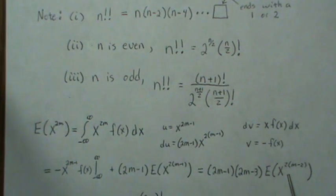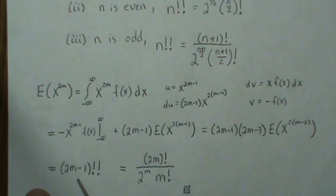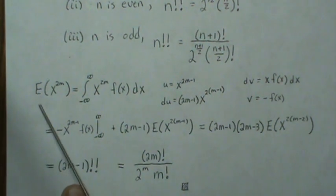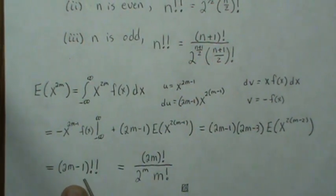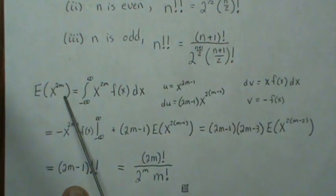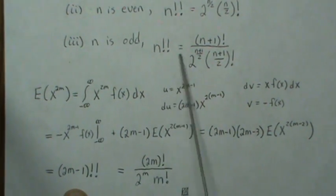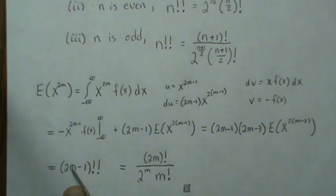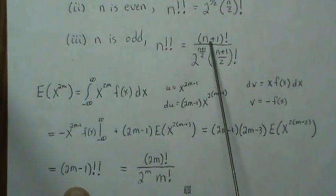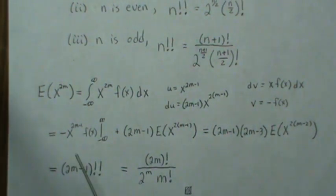This right here ends up being (2m minus 1) double factorial, and so the answer is E[X^{2m}] equals (2m minus 1) double factorial. But when you look it up in books and on the internet, you may not see it written that way. So we have to use the relationship between double factorial and factorial. Plugging in 2m minus 1 — because it's odd, we subtract 1 and it becomes even — we plug it into the formula and get the expression you'll see in books and on the internet. So this is the formula for a positive moment of a standard normal distribution.